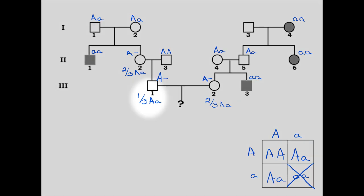The probability that the husband is Aa is one-third. The probability that the pregnant woman is Aa is two-thirds. In order for them to have an affected child, both of them must be carriers.